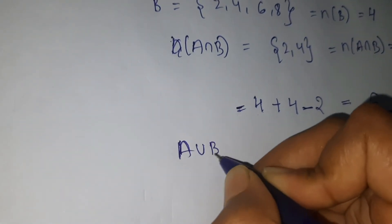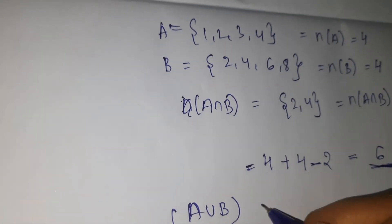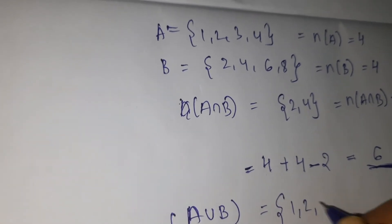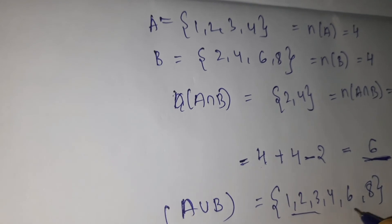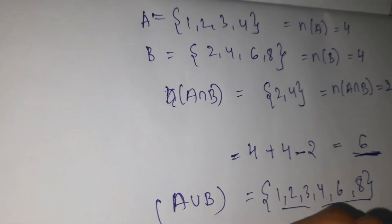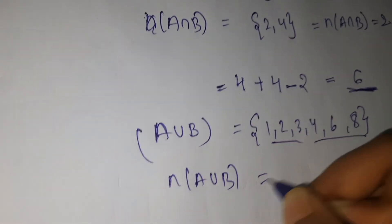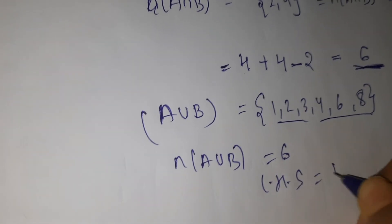So A union B is {1, 2, 3, 4, 6, 8}. How many elements do we have? Six. So n(A union B) is 6. So LHS equals RHS.